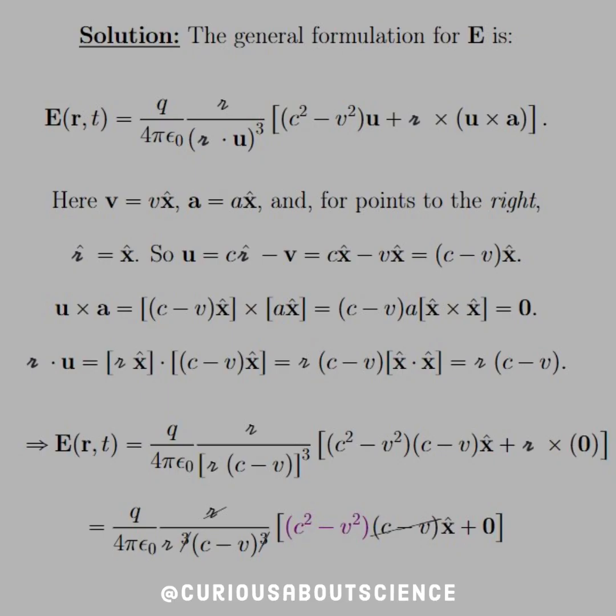We saw what the fields looked like last time, so I'm not going to copy and paste them over, but we can state here that the general formulation for E is given as such, where we have script R over (script R · u)³, C² minus V² times u plus the triple product, the script R with u and a.